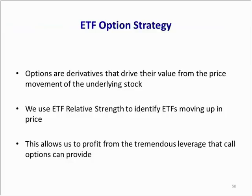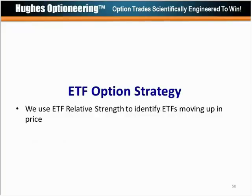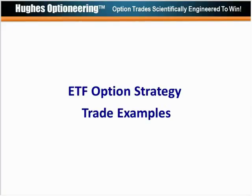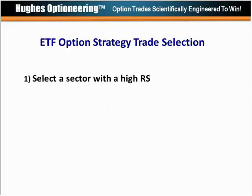Options are derivatives and they derive their value from the price movement of the underlying stock. We use ETF relative strength to identify ETFs moving up in price, which allows us to profit from the tremendous leverage that call options can provide. If you can find an ETF moving up in price and you buy a call option, that call option is going to profit as the ETF moves up.